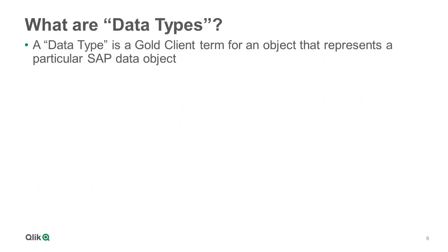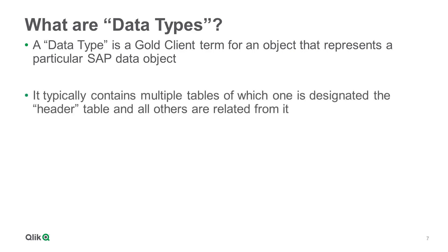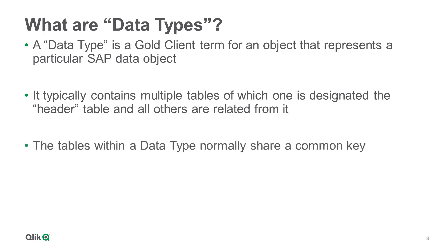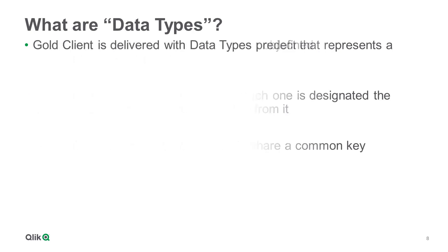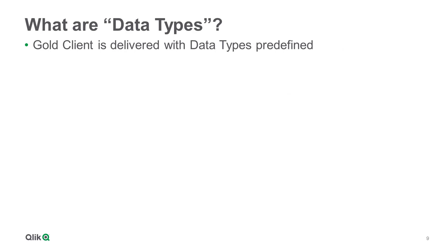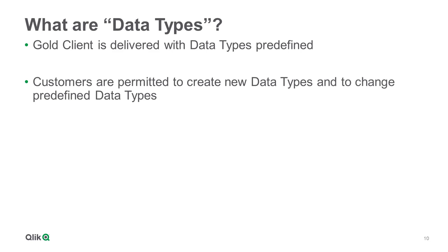A data type is a Gold Client term for an object that represents a specific SAP data object. Each data type has at least one header table defined and all other tables are related from it. The tables within a data type typically share one or more common key fields. It's worth mentioning that Gold Client is delivered with a significant number of data types already predefined, and customers are allowed to create new data types as well as make changes to the predefined data types.